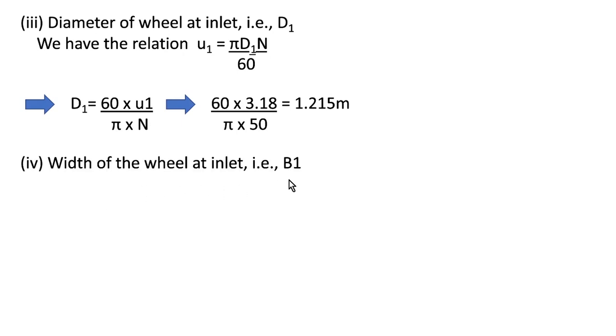To find the width of the wheel at inlet, which is b₁, we know the efficiency of the turbine is calculated by output power divided by input power. The input power is ρgQh, where ρ is the density of water, Q the amount of water discharged, and h the head.